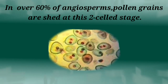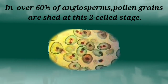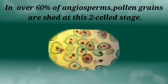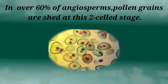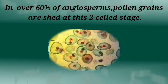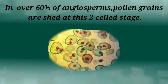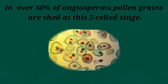The liberated pollen grains germinate after reaching the stigma. In the remaining species, the generative cell divides mitotically to give rise to the two male gametes before pollen grains are shed. That is the three-celled stage.